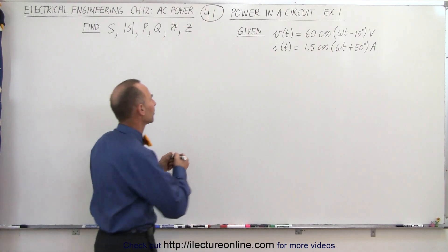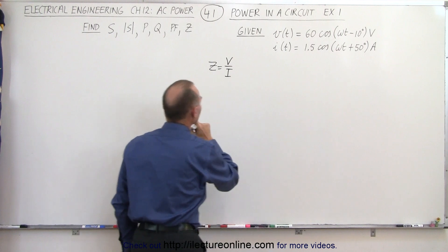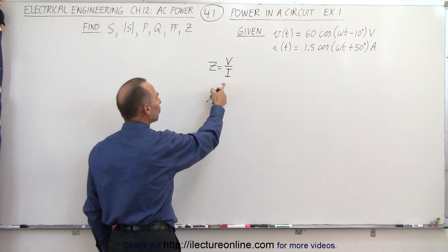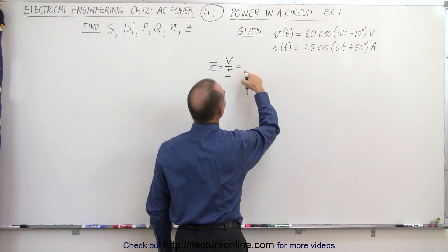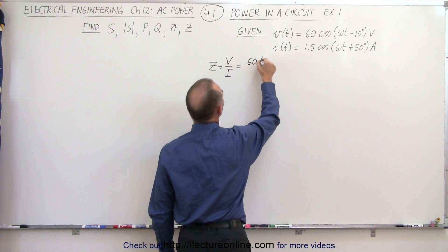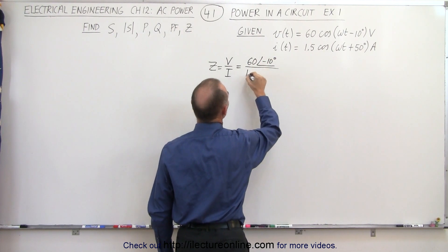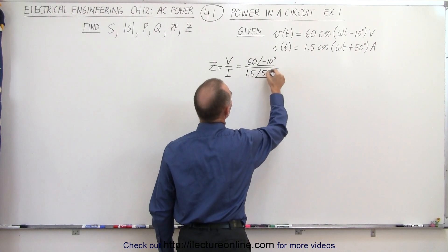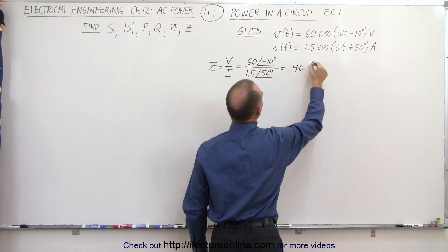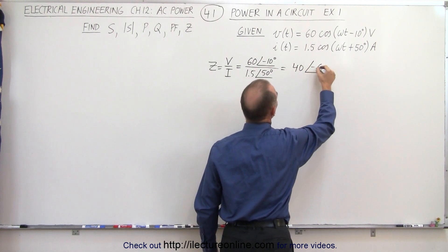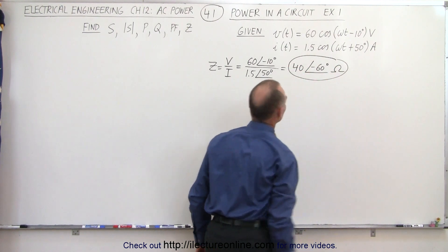Let's start with the impedance. The impedance, by definition, is voltage divided by the current — because Ohm's law says that I is V over R, or V over Z. So in this case, the maximum voltage would be 60 with a phase angle of minus 10 degrees, divided by the current, which is 1.5 with a phase angle of positive 50 degrees. So 60 divided by 1.5 is 40, with a phase angle of minus 10 minus 50, which is minus 60 degrees. This is the impedance in ohms of that circuit.